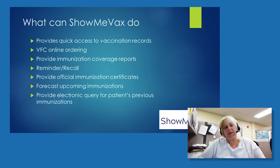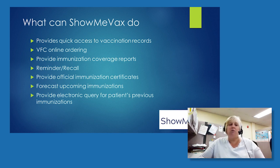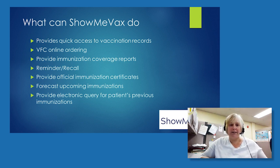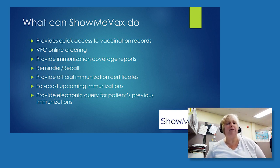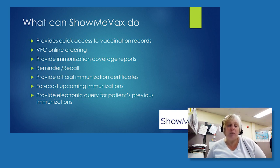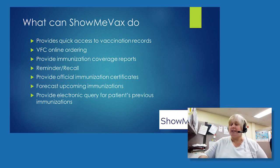ShowMeVax forecasts upcoming immunizations — say you have a 12-month-old and want to know when the next shots are due, it will forecast that for you. If a new vaccine comes out and you're not sure on the spacing, our IIS gets updates right from CDC, so it will be updated quickly. If you have a new patient and don't know where they got their last shots, if that provider had put their information into ShowMeVax, you could pull up that record. Medicaid also puts vaccines in for their patients, so there is a lot of data in the system.